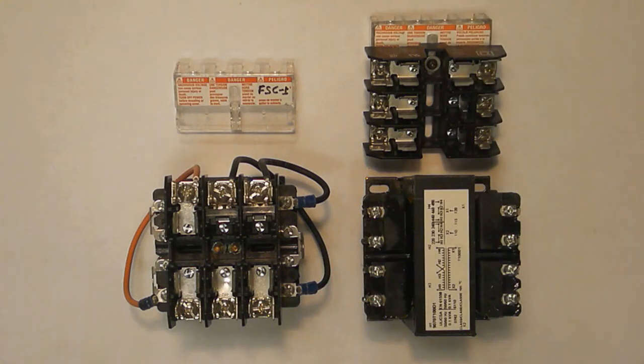An accessory fuse block kit, catalog number 9070FB1A or 9070FB1B, depending on the individual transformer, can be used to make a T type transformer into a TF type.